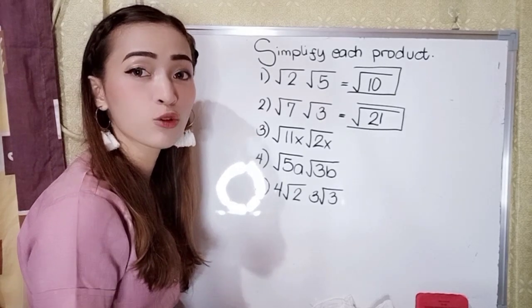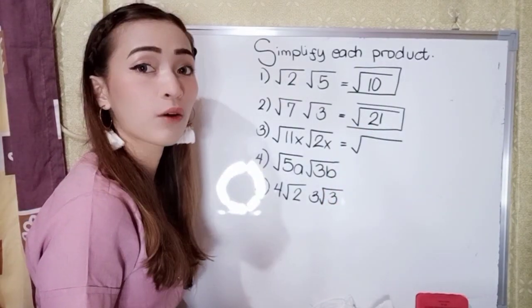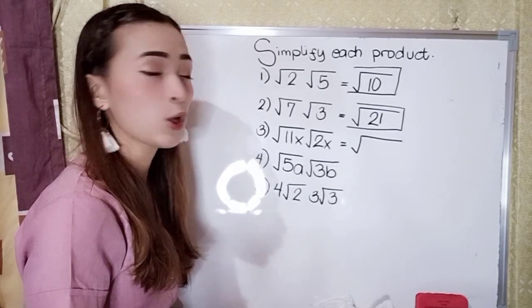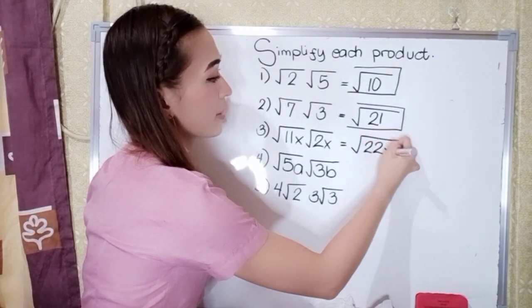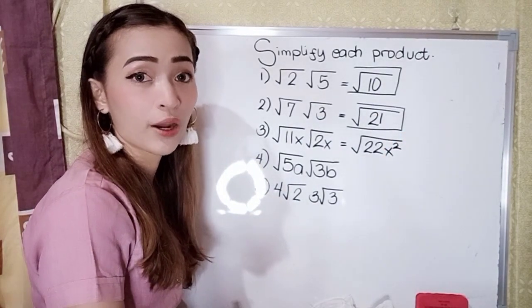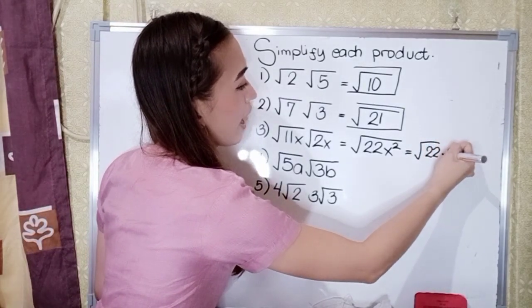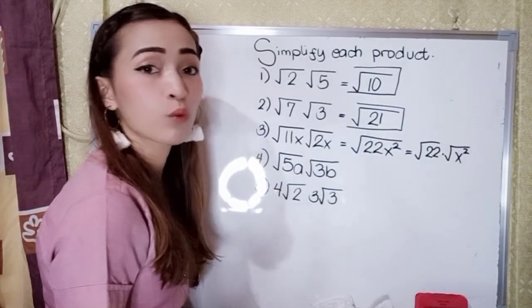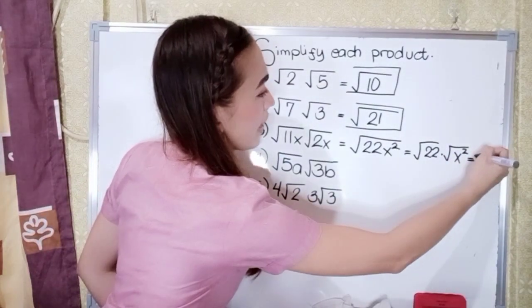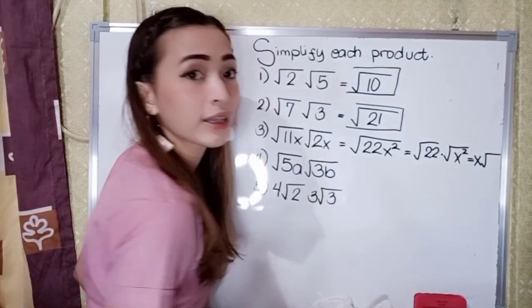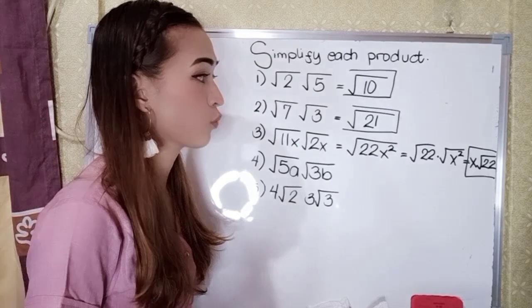For number three, we have the square root of eleven x times the square root of two x. Multiply the radicands: eleven x times two x is twenty-two x squared. Twenty-two is not a perfect square, but x squared is a perfect square. So this becomes square root of twenty-two times square root of x squared. The square root of x squared is x, so our answer is x square root of twenty-two.